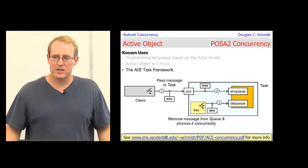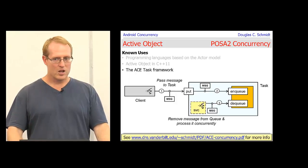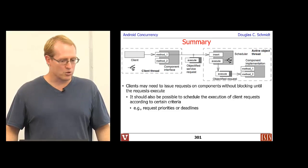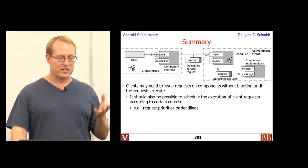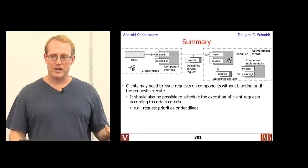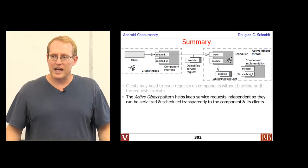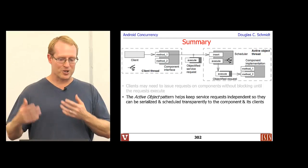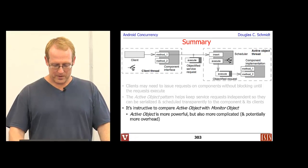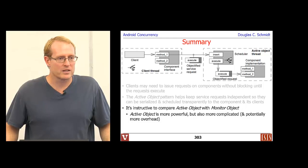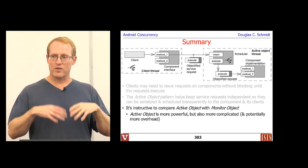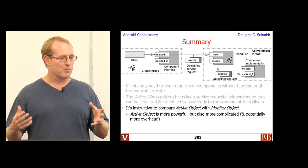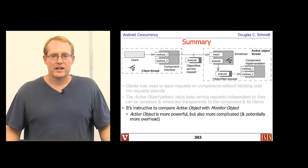ACE, the framework developed at Vanderbilt and other places, also has active object implementations. To summarize: clients may sometimes need to issue service requests that run in other threads of control, and we may want to schedule those operations based on criteria like time, priority, or deadlines. The active object pattern coordinates all this and makes it look more like a regular programming object that just happens to run concurrently. It's instructive to compare and contrast active object with monitor object — the main difference is active object is more powerful and can run things more concurrently, but it's also more complicated with potential additional overhead.